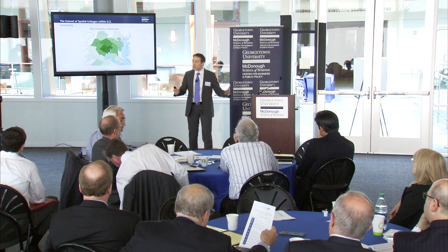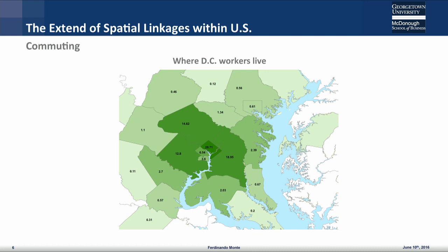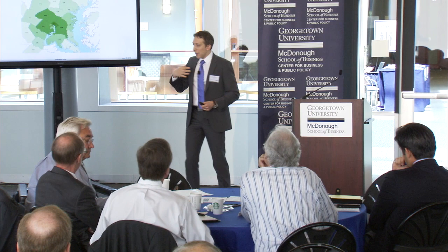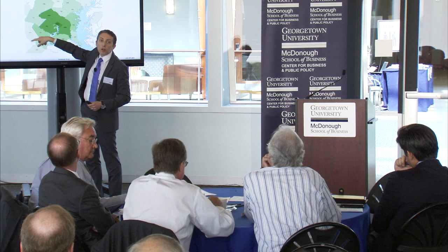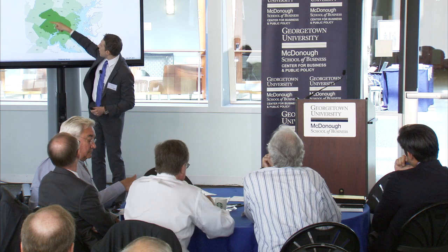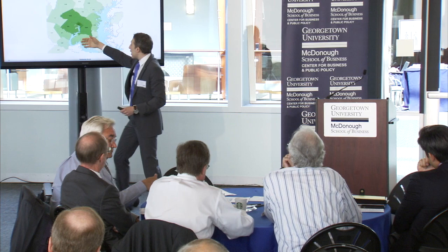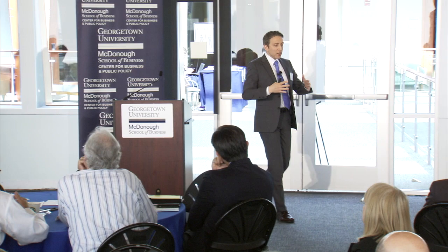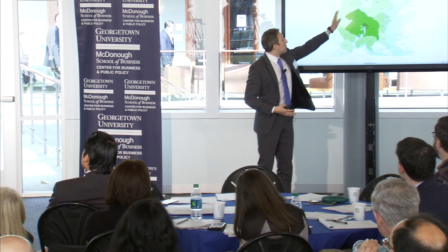The second piece I want to point out is how far these spatial linkages extend. This is a map of where D.C. workers live. 30% of the people that work in D.C. actually live there, 12% come from Fairfax County, 14% come from Montgomery County. The question is: if labor demand increases out in those areas, is this going to impact labor supply to D.C.? There are people in the middle who are big contributors to D.C. who can choose whether to work there or work outside. So spatial linkages in labor markets extend far beyond what we would initially think — beyond what we'd think is a normal commuting distance.